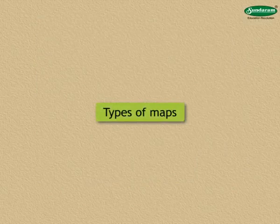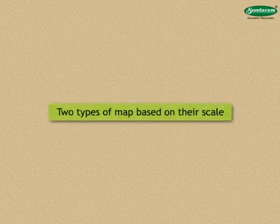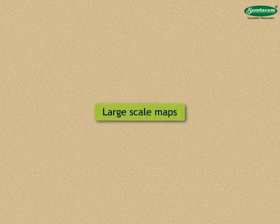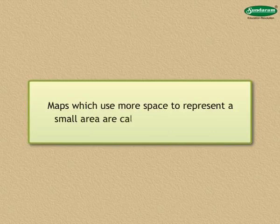Let us study the types of maps. There are two types of maps based on their scale as follows. Large scale maps: Maps which use more space to represent a small area are called large scale maps.